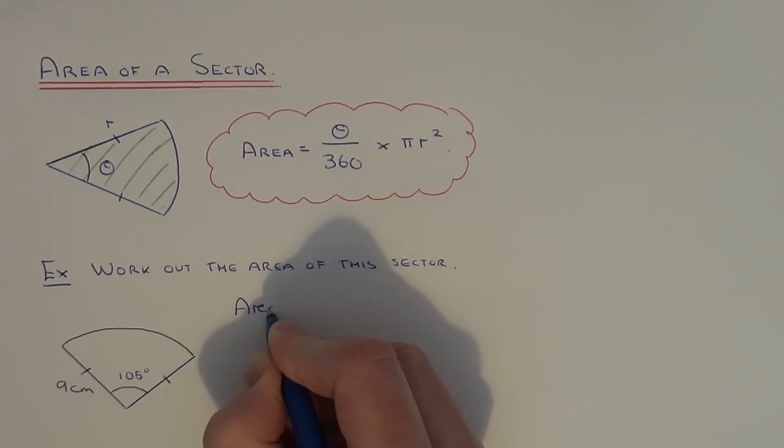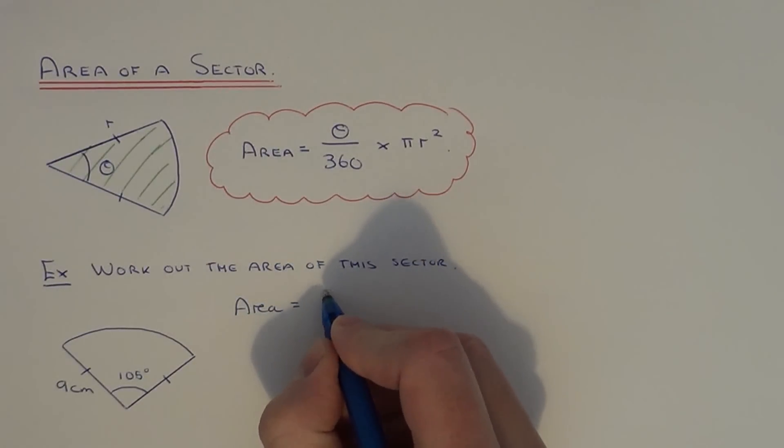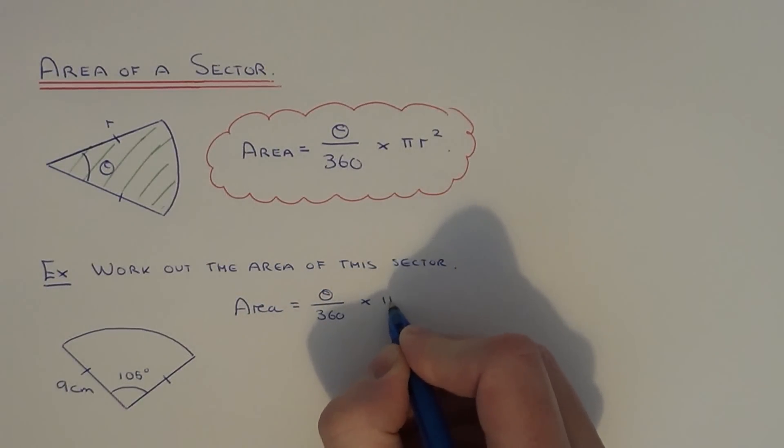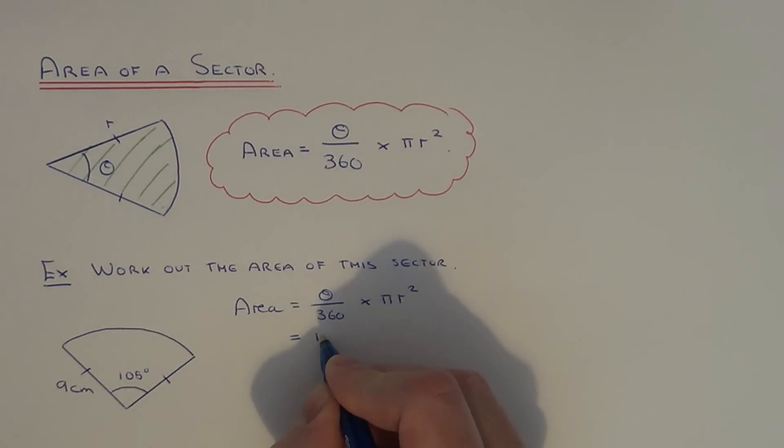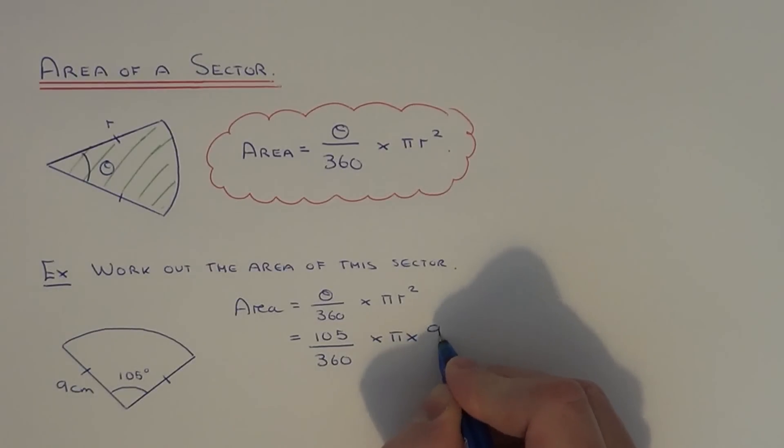Let me just copy down the formula again. The area equals theta over 360 times pi times the radius squared. Our angle theta is 105. So we do 105 divided by 360 times pi times the radius squared.